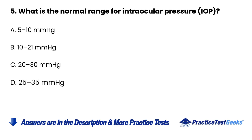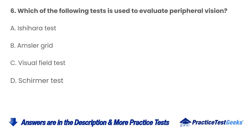5. What is the normal range for intraocular pressure (IOP)? A. 5-10 mmHg B. 10-21 mmHg C. 20-30 mmHg D. 25-35 mmHg